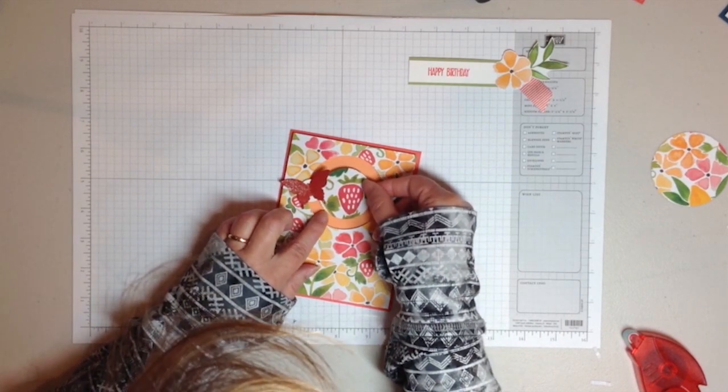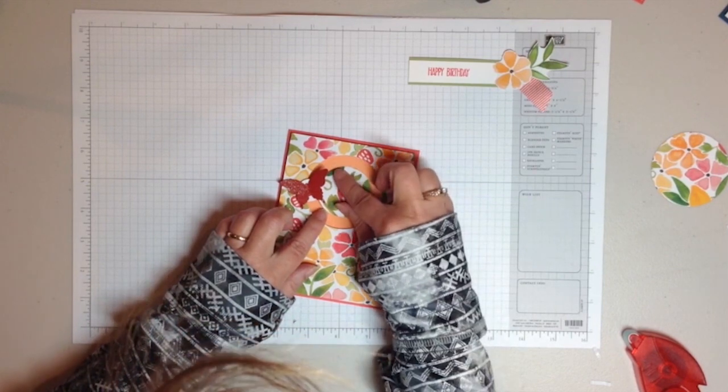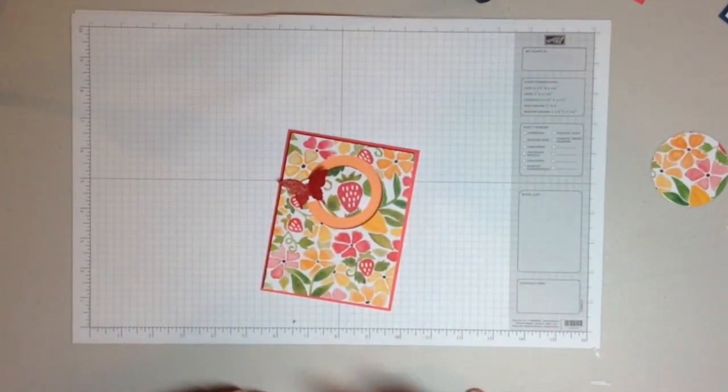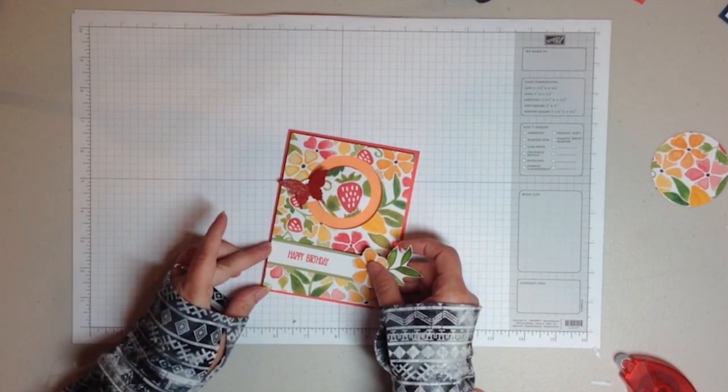For this butterfly, I just added a bit of Gold Wink of Stella. And slip that in. Carefully line up. And then just add the sentiment at the bottom and it's done.